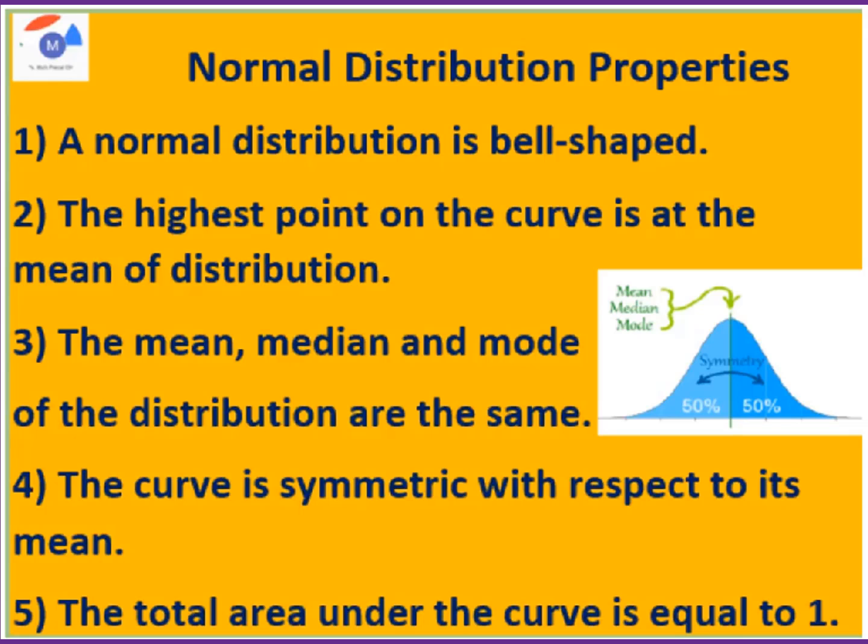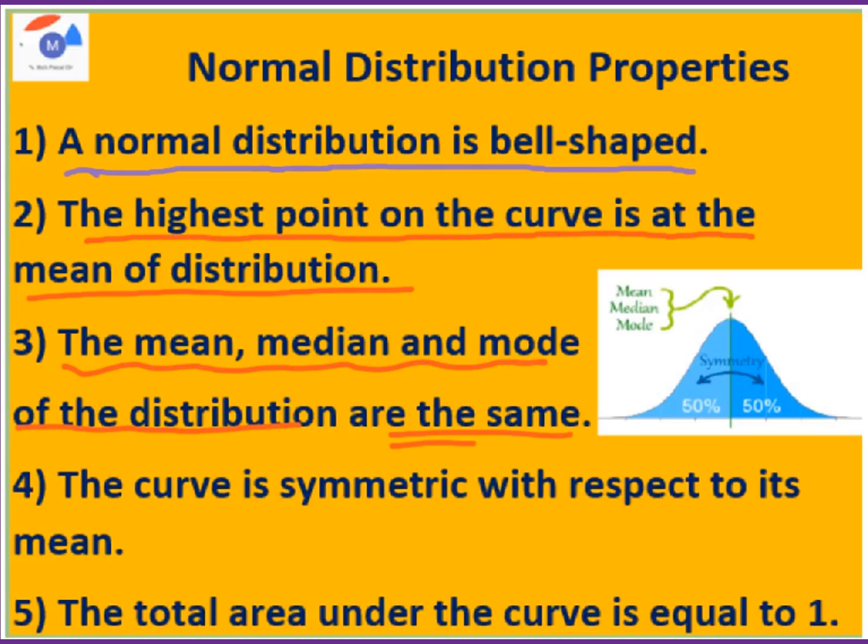Normal distribution properties. A normal distribution is bell-shaped. The highest point on the curve is at the mean of distribution. The mean, median, and mode of the distribution are the same. The curve is symmetric with respect to its mean. The total area under the curve is equal to 1.